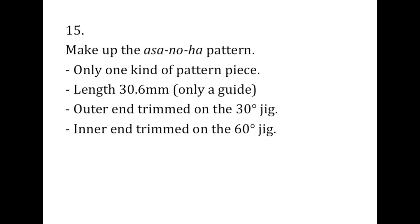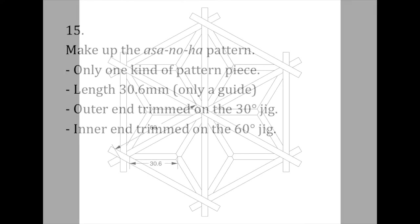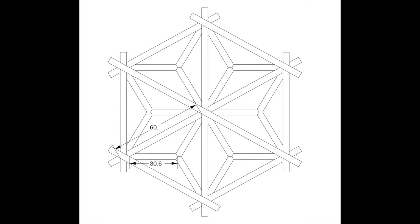And at last, on to the asanoha pattern. This asanoha is without doubt one of the simplest patterns to make. There's only one kind of pattern piece and there are three identical pieces in each triangle. One end is trimmed on the 30 degree jig and the other end on the 60 degree jig. The dimensional diagram shows that the pattern piece is 30.6mm long. But this should only be used as a guide.